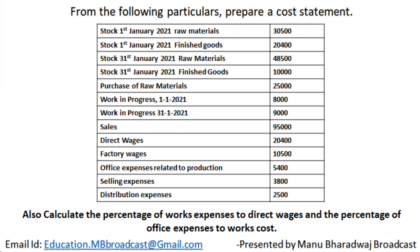Stock on 1st January 2021 — raw materials is 30,500 and finished goods is 20,400. Stock on 31st January 2021 — raw materials is 25,000. Work in progress as on 1st January 2021 is 8,000 and as on 31st January 2021 is 9,000.